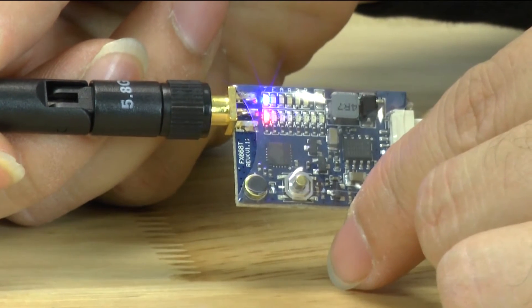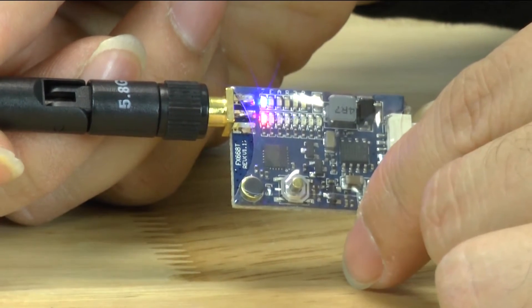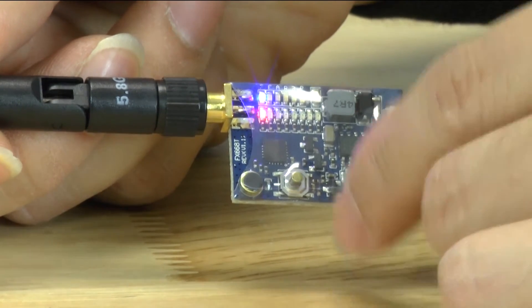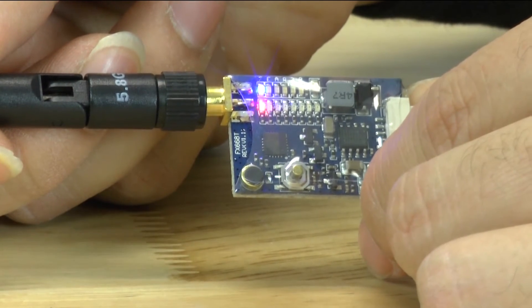There is a blue LED and a red LED. So the blue LED represents the band that you're currently on and then the red LED represents the channel you're on.